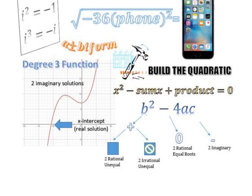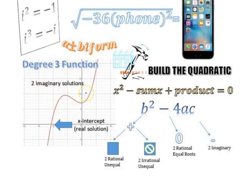A couple other things: imaginary solutions. If you have a degree 3 function, this is your real solution — that's your x-intercept — but these are your imaginary solutions. You can never have three imaginary solutions because they come in pairs. So they're either all going to be real, or two of them will be imaginary and one will be real. Those are the only scenarios you'll have.